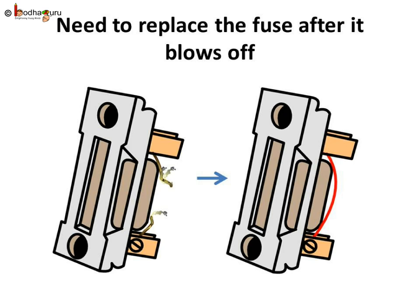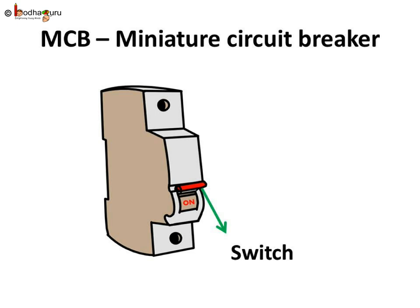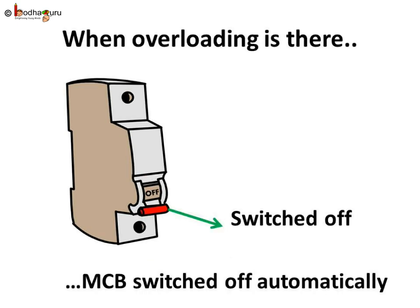It's a good solution. But do we have a better solution? Nowadays, there is a better solution: MCB, or Miniature Circuit Breaker. The MCB works like an automatic switch. The MCB breaks the circuit and stops the current flow when the circuit is overloaded, just like a fuse.